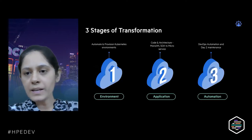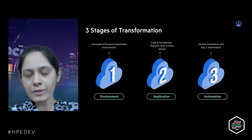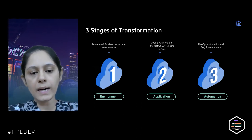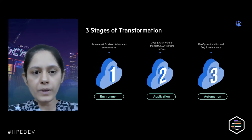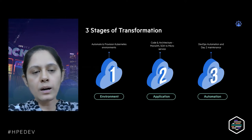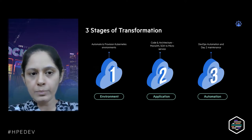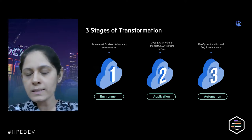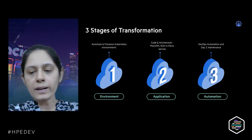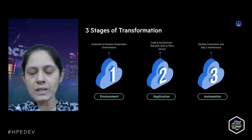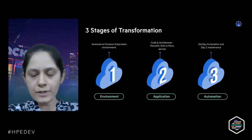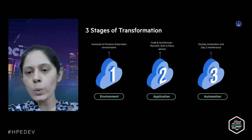As you can see, we have three stages of transformation. It generally starts with how we transform our environment — from a bare-metal server to a VM to a more standard Kubernetes environment. How do we provision those environments and automate the entire provisioning process, including compute and storage? We'll look at HP Ezmeral and MapR as the underlying standard infrastructure on which we start the transformation.